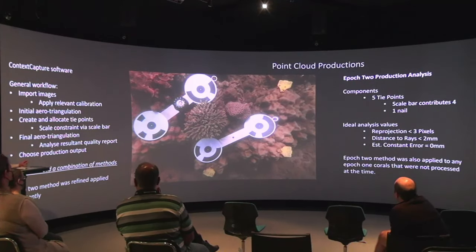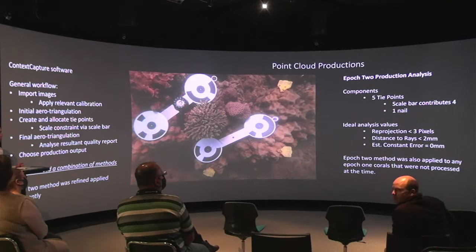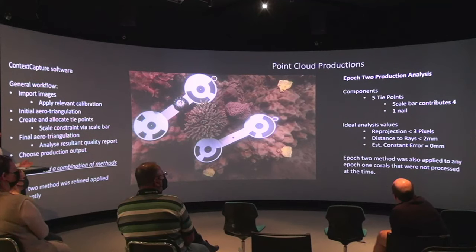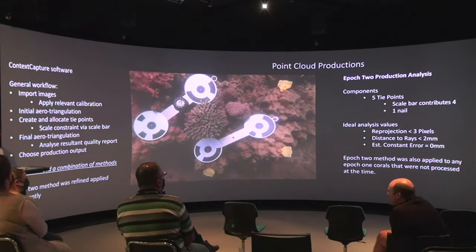In terms of analysing our output through the quality report, I can look at the reprojection, distance to rays, and the scale constraint estimate — because I use the scale bar as a fixing tool. Reprojection is hopefully less than three pixels, and distance to rays hopefully less than two millimetres. In this case, I've only got the one scale constraint and I'm looking for zero or perfect scale. Looking at the table, we can see we've pretty successfully done this. The distance to rays are occasionally a bit higher, but not to the point where we'd say it's complete rubbish. When it's underwater photogrammetry, we can let it slide a little bit. Two and a half, three millimetres — close enough. All our errors are really good.